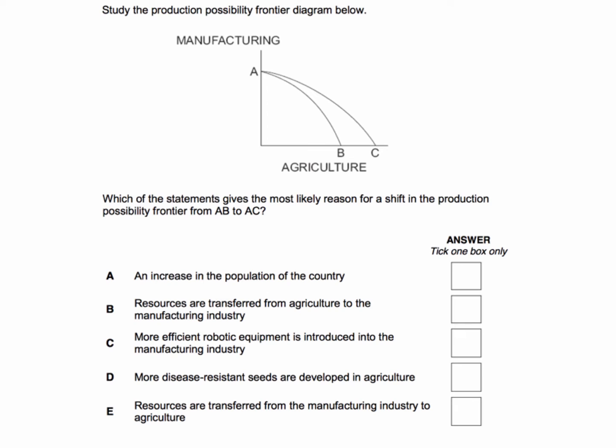Here's the question: study the PPF diagram below, which shows a combination of goods that we can produce in manufacturing and agriculture using all of our available resources. We're asked which of the statements gives the most likely reason for the shift in the PPF from AB to AC.